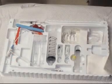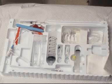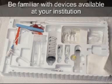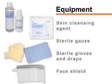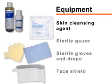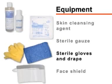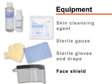There are various devices, which are frequently assembled in prepackaged kits, that can be used to perform paracentesis. You should be familiar with the specific devices available at your institution. For sterile preparation and administration of anesthesia, you will need a skin cleansing agent, sterile gauze, sterile gloves and drape, and a face shield.